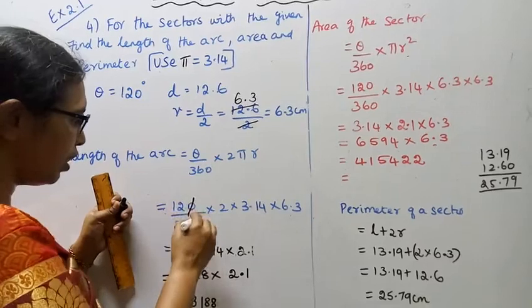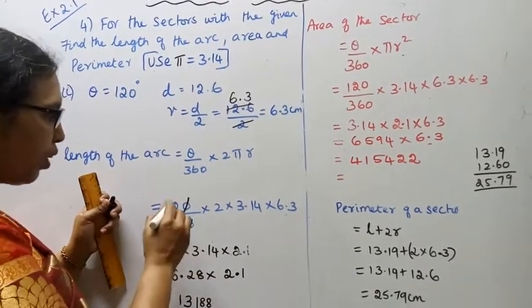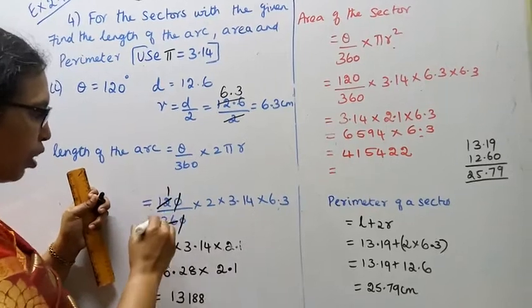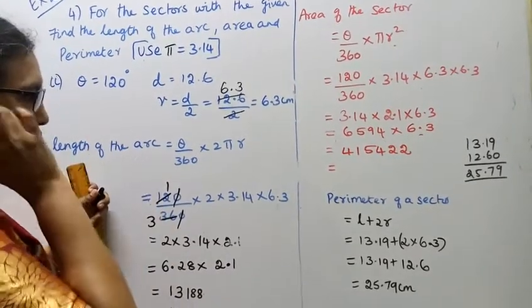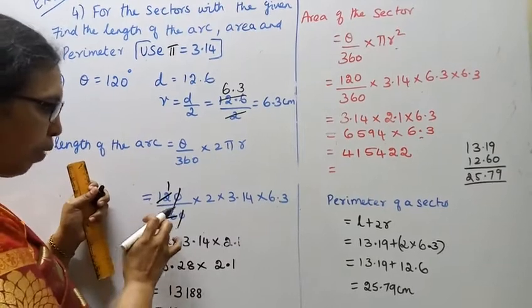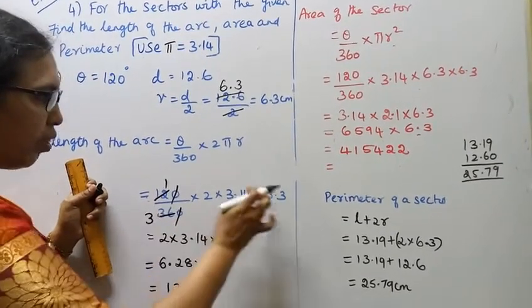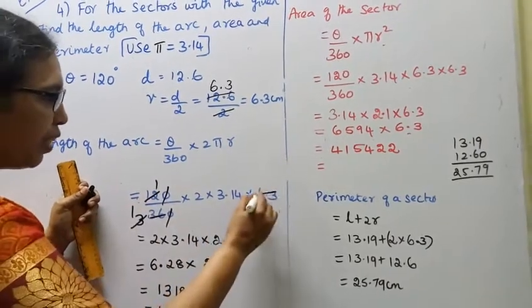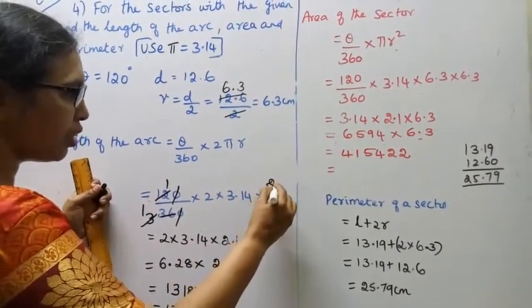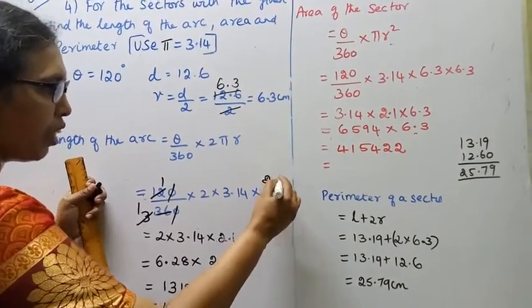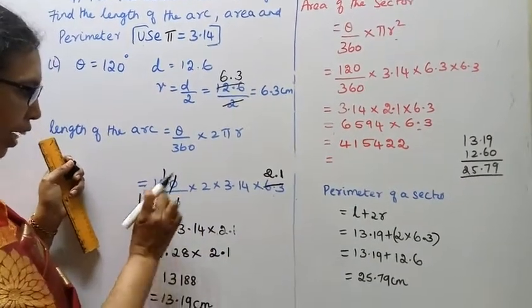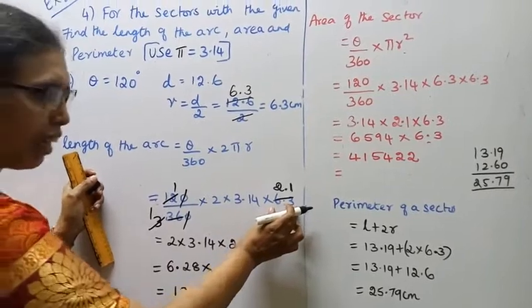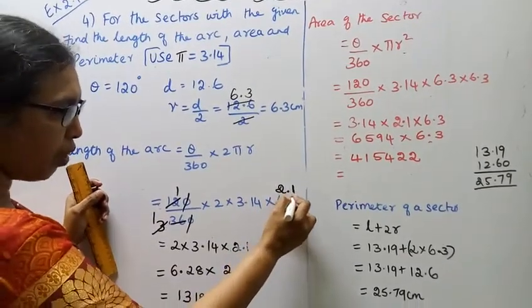Cancel the zeros: 120 and 360 simplify. 12 threes are 36, so after cancellation, 12 ones are 12 and 12 threes are 36. Then 3 ones are 3, three twos are 6, three ones are 3. Continue cancelling the common factors.